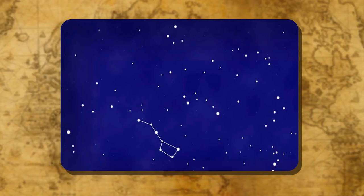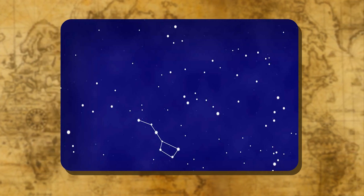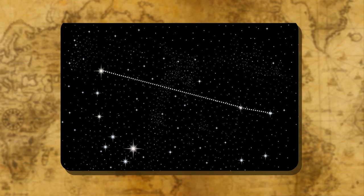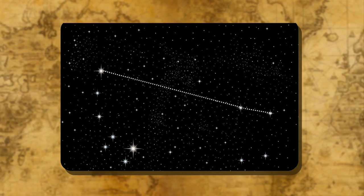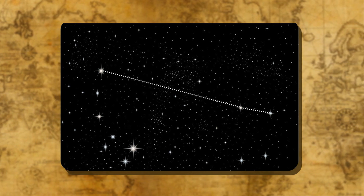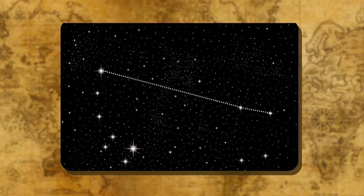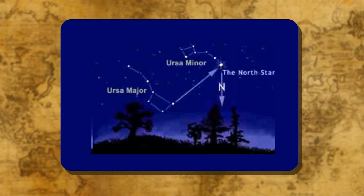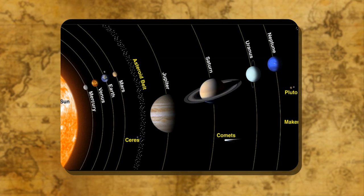The North Star indicates the north direction. It is also known as the Pole Star. It always remains in the same position in the sky. We can locate the position of the Pole Star with the help of the Sapta Rishi.